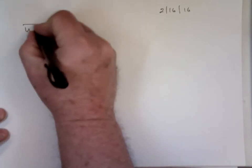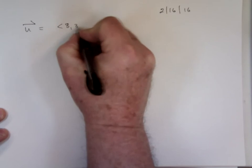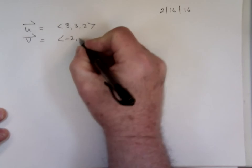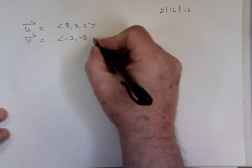U equals 8, 3, and 2. V equals negative 2, negative 6, negative 1.